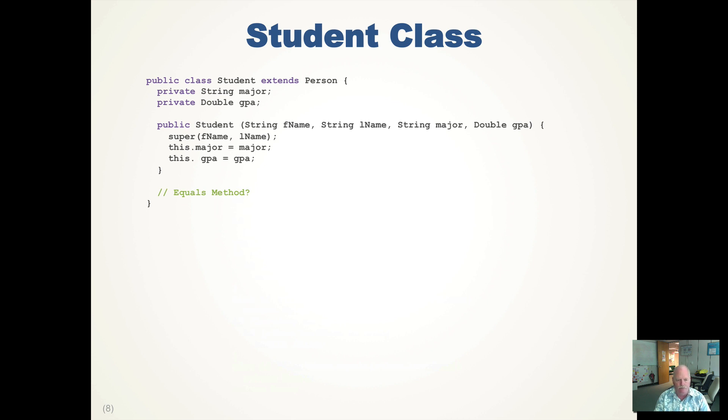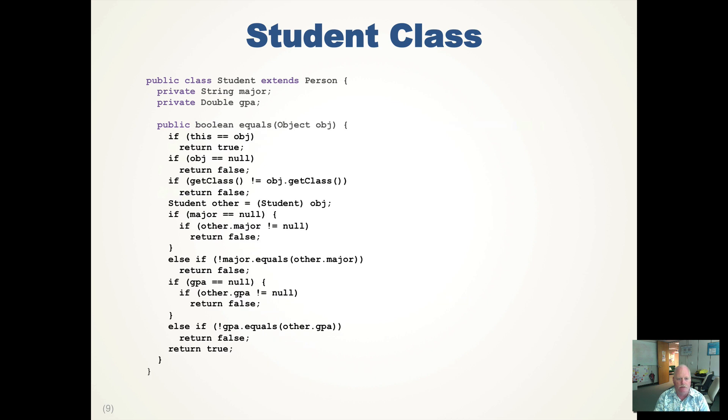So let's take a look at an equals method that's very similar to the person one. In fact, it's almost identical. We check to see, are we pointing to the same object? Is the other one null? We return false. We check our classes. So they're both a student class. We then do our cast and then we check our majors and then we check our GPAs. And if everything is okay, we return true. But...